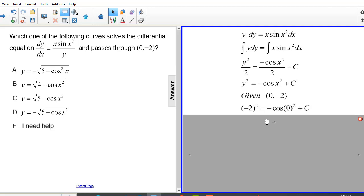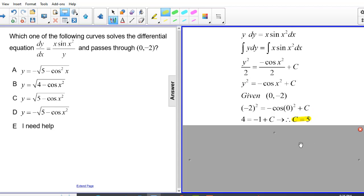And I replace y with negative 2 and x with 0, which gives me c equals 5. And you can see the work here on your screen. I'm just going to highlight the fact that c equals 5.